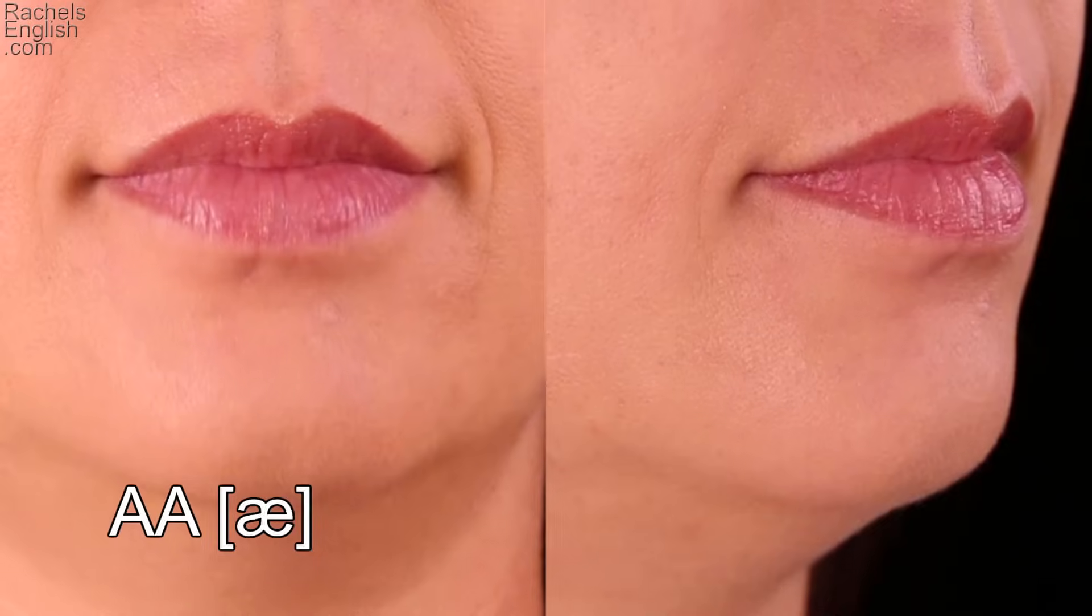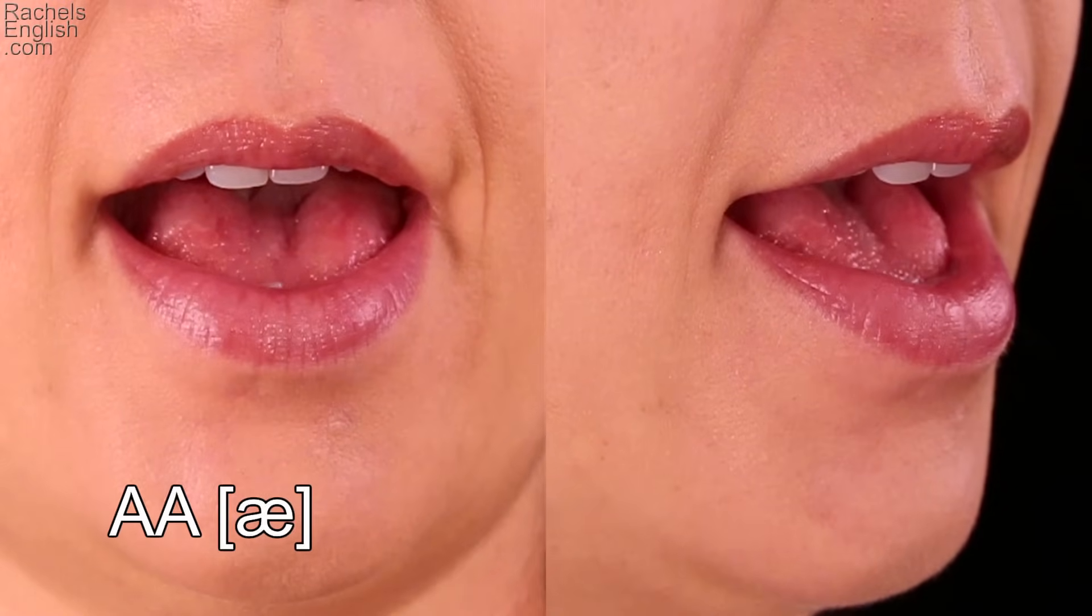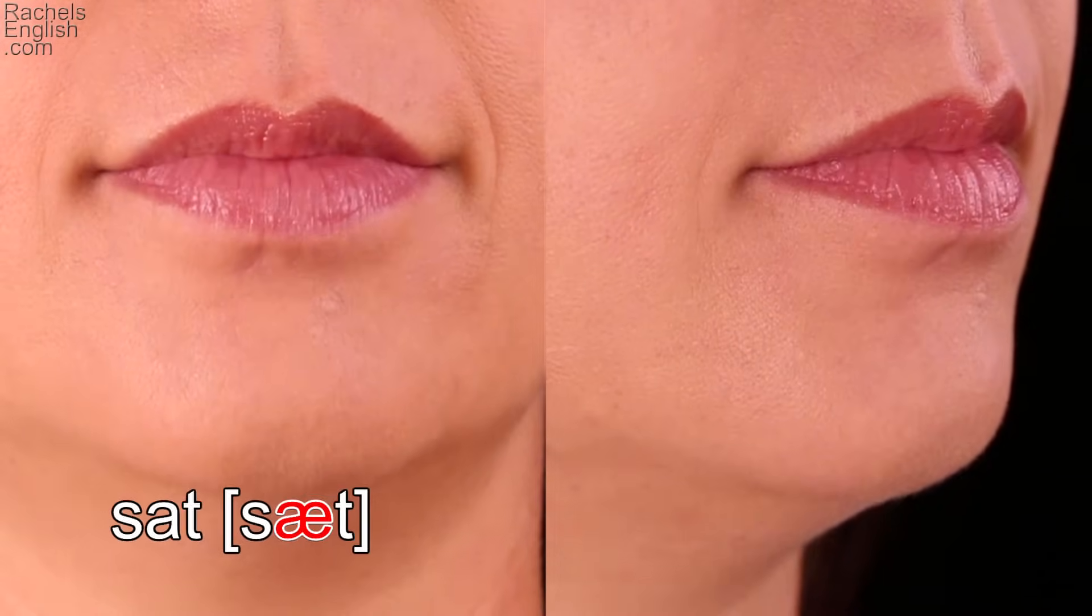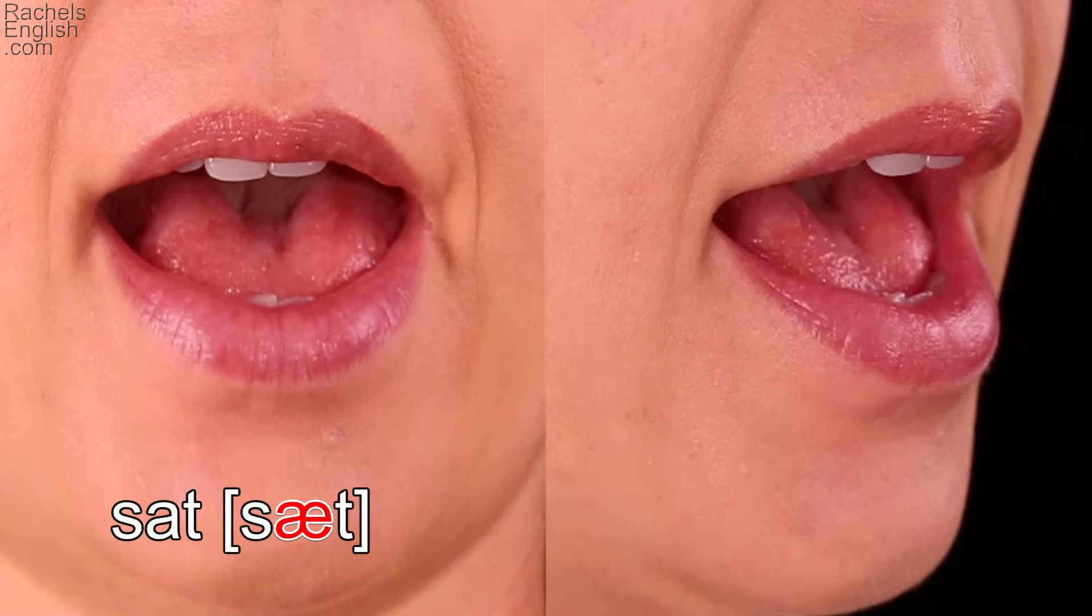You can also see the corners of the mouth pull back and up a little bit. Let's take a look at the pure AA vowel, up close and in slow motion. The tongue tip is down and the back of the tongue lifts. Here's the word sat. The tongue position is easy to see because of the jaw drop needed for this vowel.